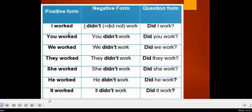For the negative form in the past tense, you always add 'didn't.' So 'I worked' becomes 'I didn't work.' For questions, you start with 'did' — 'I worked' → 'Did I work?' So with the present simple it's 'doesn't/don't' and 'does/do,' and with the past it's 'didn't' and 'did.' Pay attention: when you add 'didn't,' you remove the 'ed' from the verb, because 'didn't' already carries the past meaning.